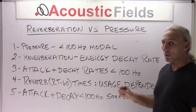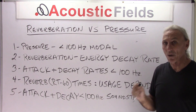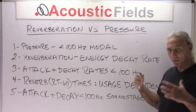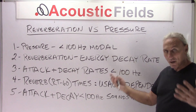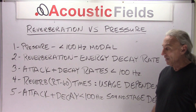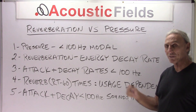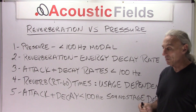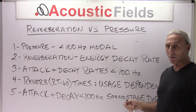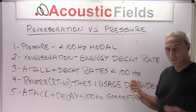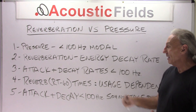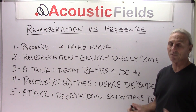Attack and decay rates below 100 cycles, if managed correctly in your room, are really good for your sound stage — they help fortify everything you've done on your sound stage. A company that subscribes to this philosophy is JL Audio, and they do a really good job producing a lot of energy in a small amount of space. Attack and decay rates in the low end are definitely good for the sound stage if you get them right.